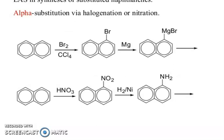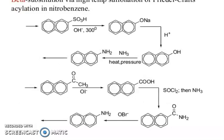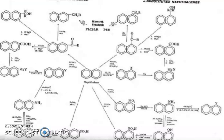In synthesis of substituted naphthalene via halogenation or nitration: bromination, then magnesium (alkyl magnesium bromide), then nitration at position 1, H2/nickel gives NH2. Acylation in nitrobenzene with different routes. These are the summary of naphthalene reactions — starting from naphthalene you get different substitute products through different routes.